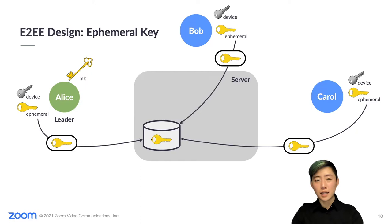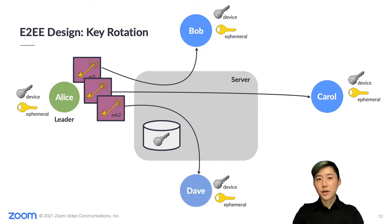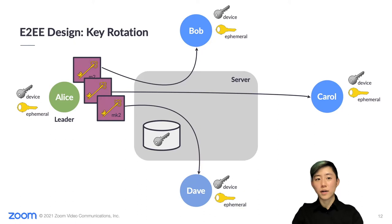As you can see in the diagram, we use existing Zoom-hosted infrastructure as a bulletin board for clients to announce keys and other information to each other. In order for a user to join the meeting, the leader computes a Diffie-Hellman shared secret from their own and that participant's ephemeral keys, and uses the resulting secret to encrypt the meeting key for that participant. When users join and leave the meeting, the meeting leader rotates the meeting key to a new random meeting key, so that participants can only decrypt the parts of the meeting that they were in.